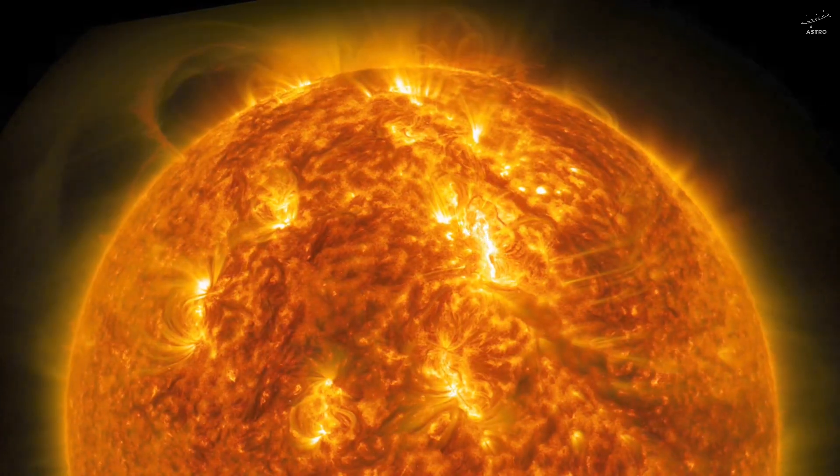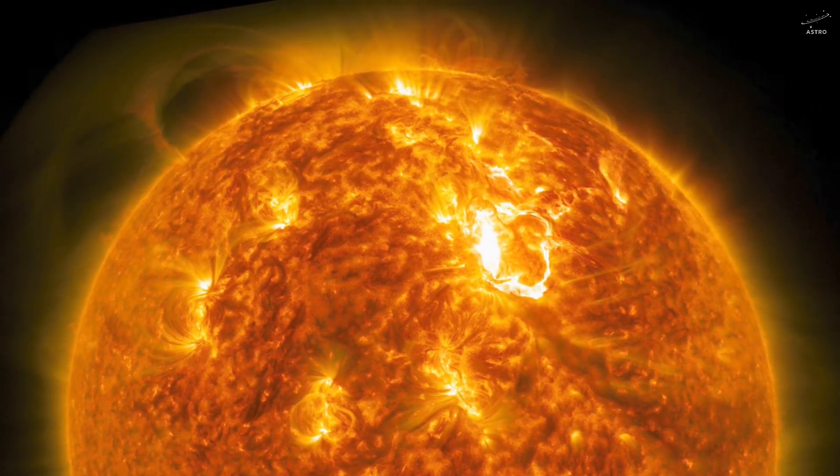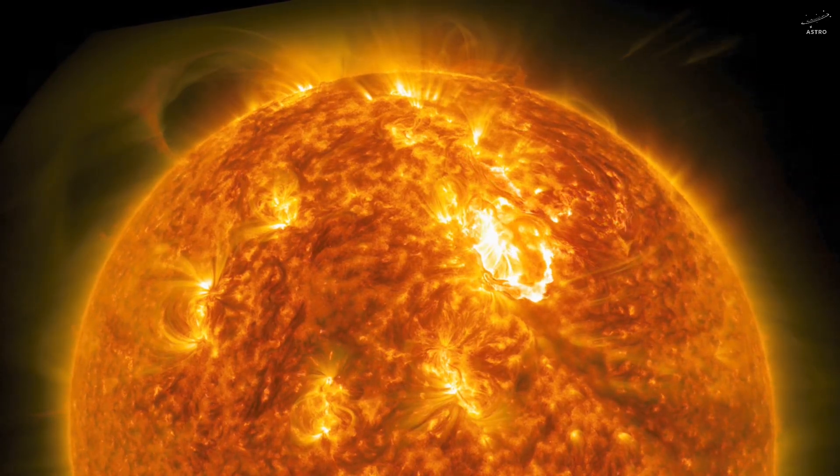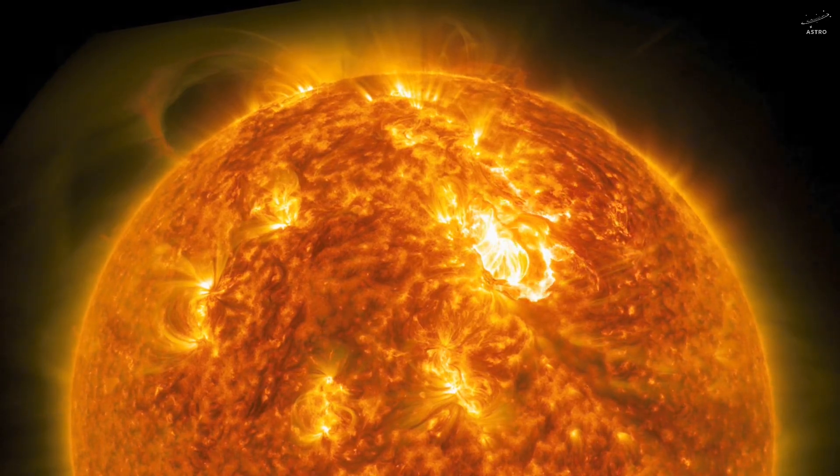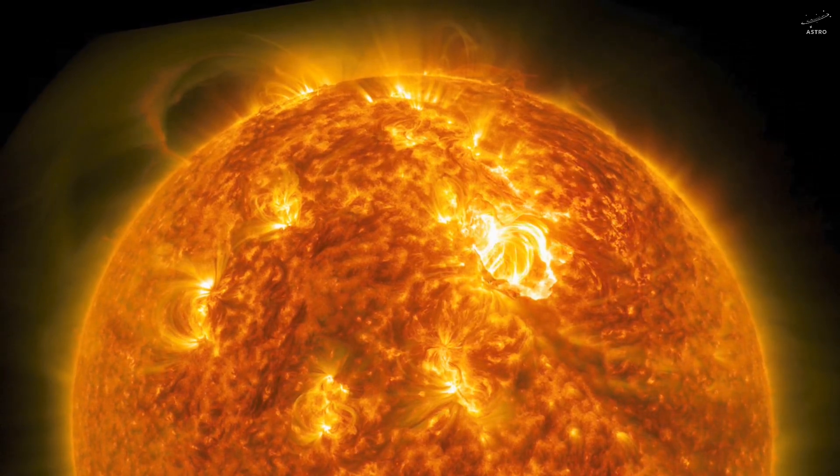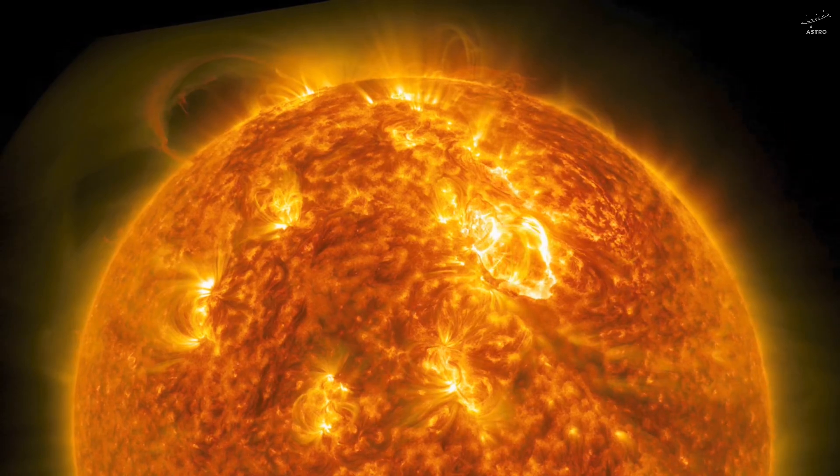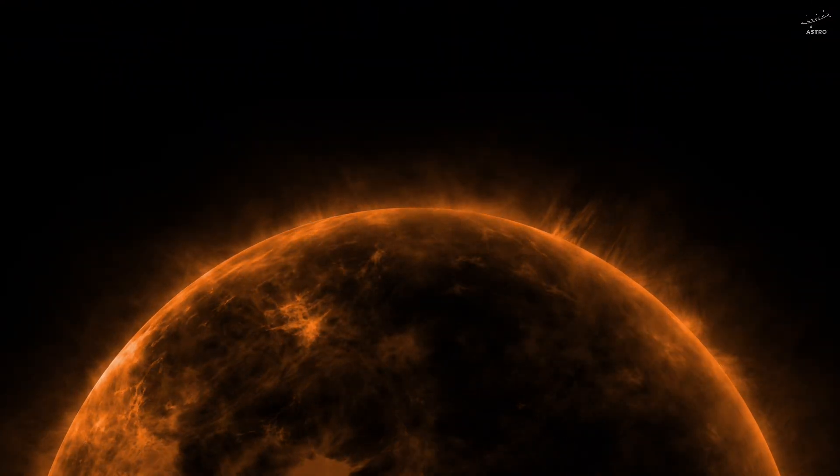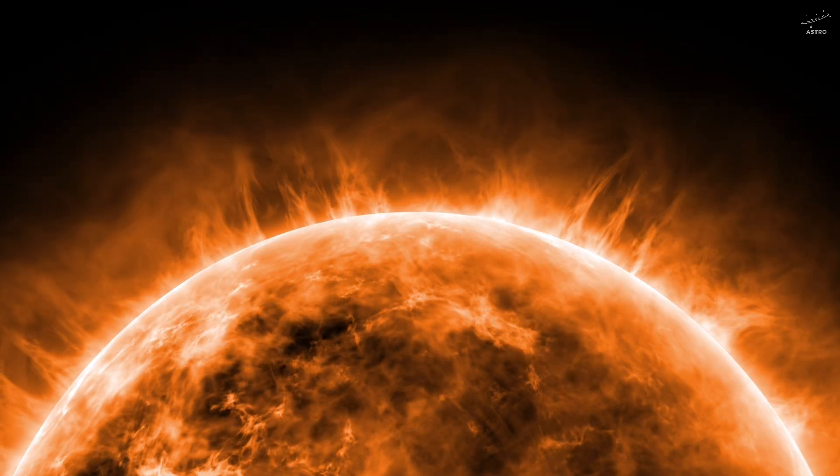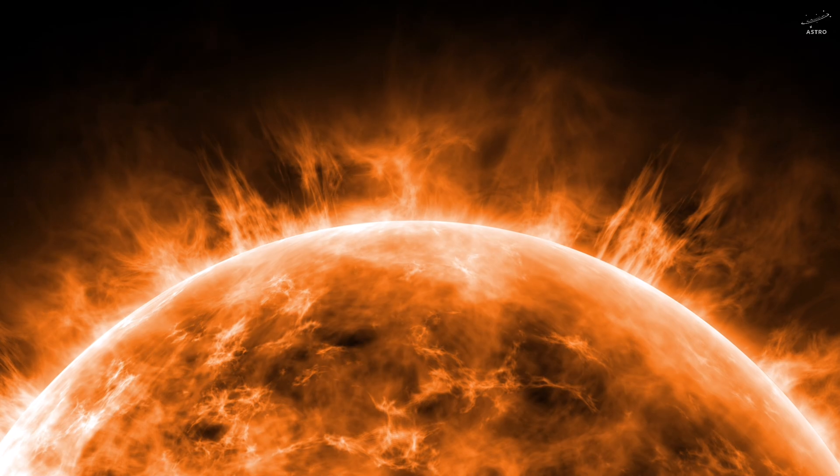Now, imagine standing on the sun's surface. If somehow you could survive, you'd be standing on nothing. There's no solid ground. Only a sea of plasma with surface temperatures around 5,500 degrees Celsius. That's nearly 10,000 degrees Fahrenheit. And at its core? A staggering 27 million degrees Celsius. Twisting magnetic fields whip streams of plasma into fiery arcs, shooting out as solar flares, stretching hundreds of thousands of kilometers taller than Earth itself.